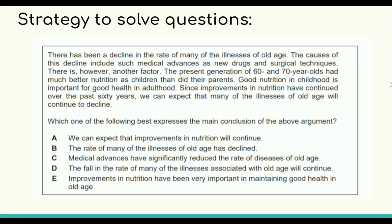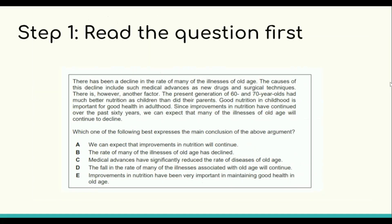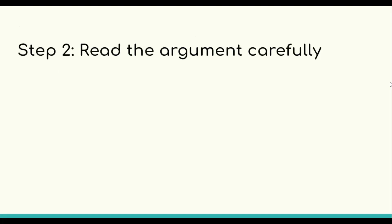Step one is to read the question first — the little text — and once you know the question is asking about the conclusion, you can enter conclusion mode. Step two is to read the argument carefully. Typically an argument consists of one or more premises, a link between premise and conclusion, and a conclusion.